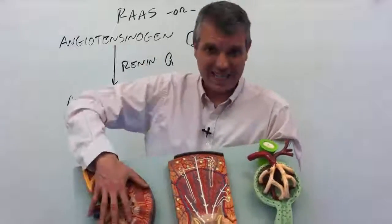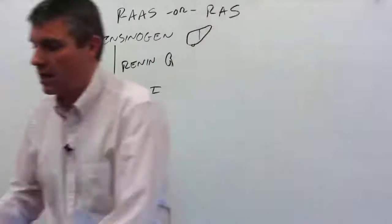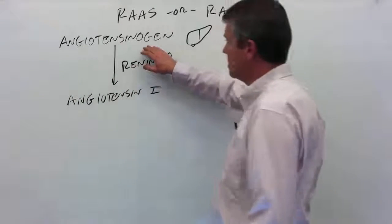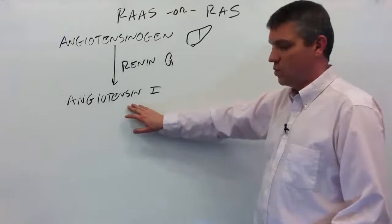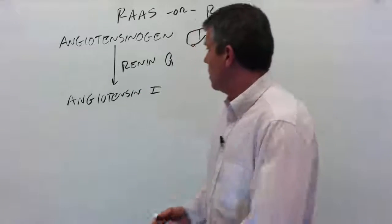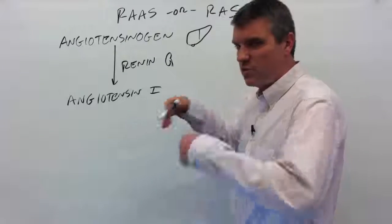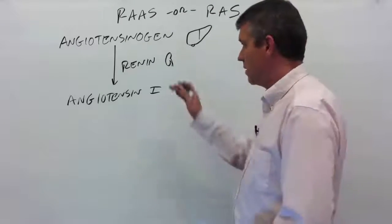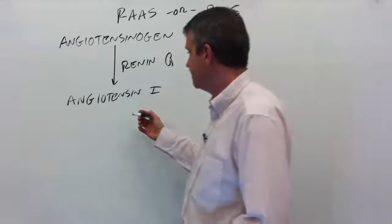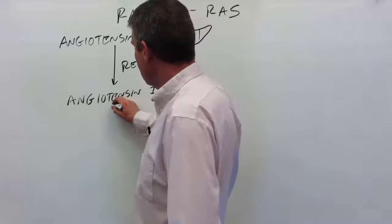So again, it's made by the kidneys. Renin converts angiotensinogen into angiotensin I. And just to restate, the kidneys make this enzyme in response to low blood pressure, hoping for an increase in blood pressure.